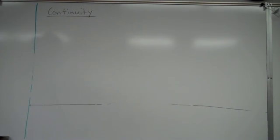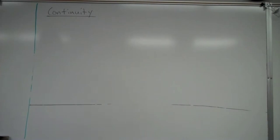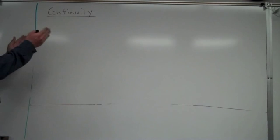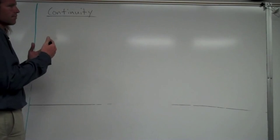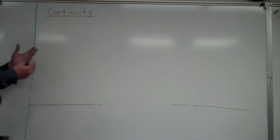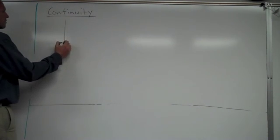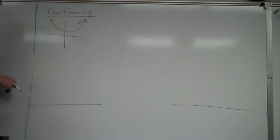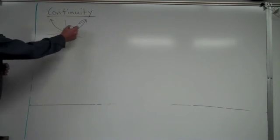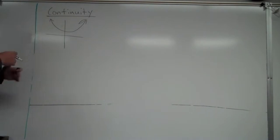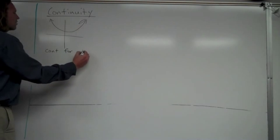Let's talk about continuity. We'll talk about continuity at a specific point, and also continuity throughout a whole function. A function is continuous if there are simply no breaks in the graph — when you draw the graph, there's no place where you have to pick up your pencil to continue drawing it. Something basic like a capital-type curve: you can draw it in one continuous motion, no breaks, no holes, no asymptotes. This graph is continuous for all values of x.